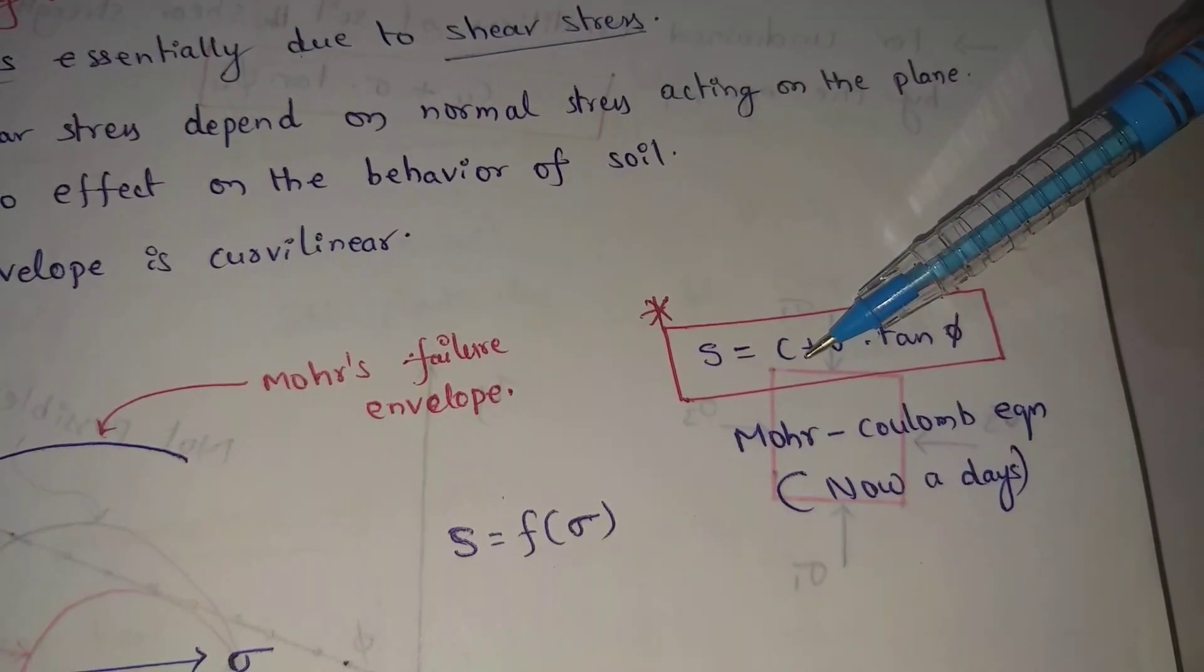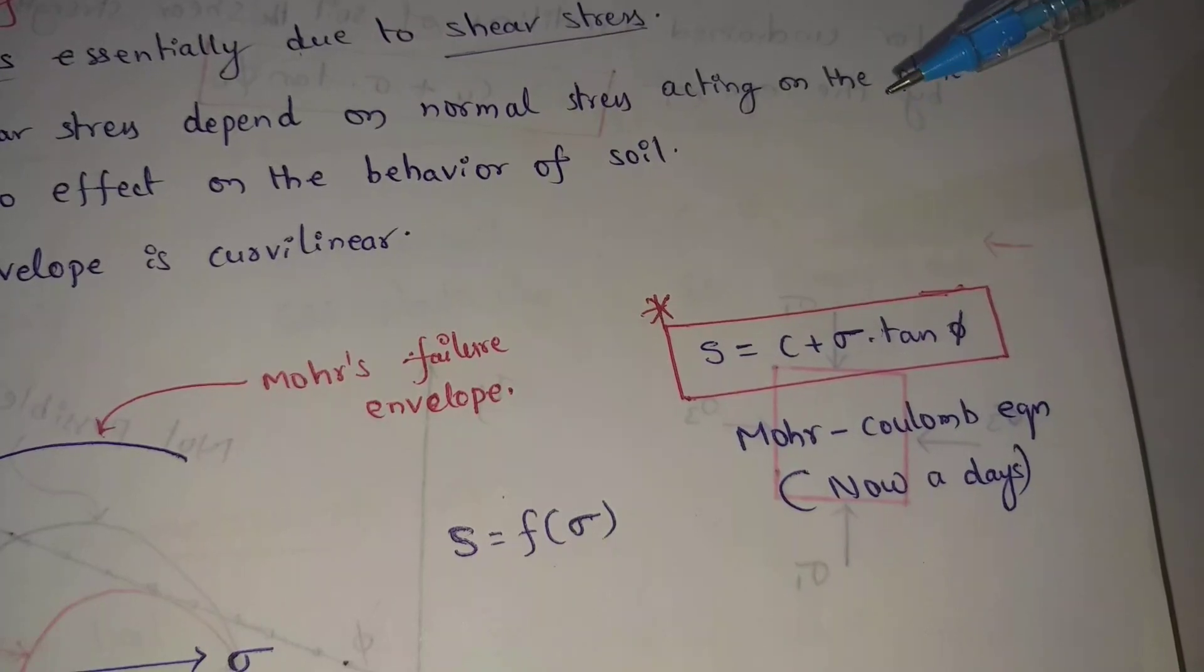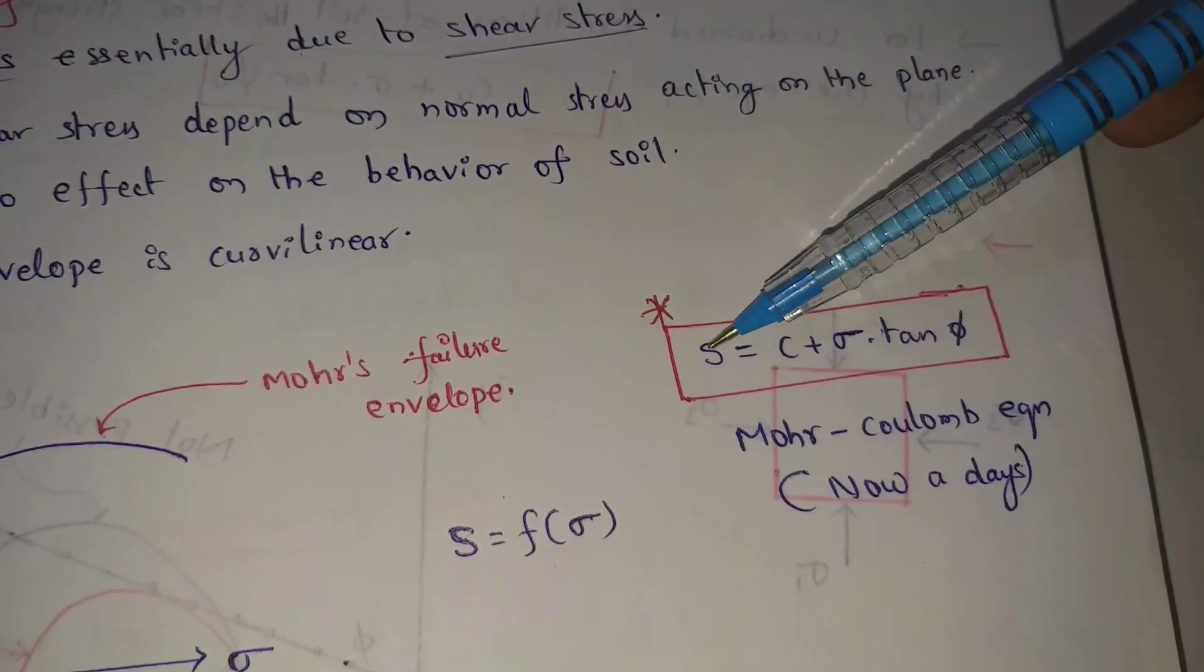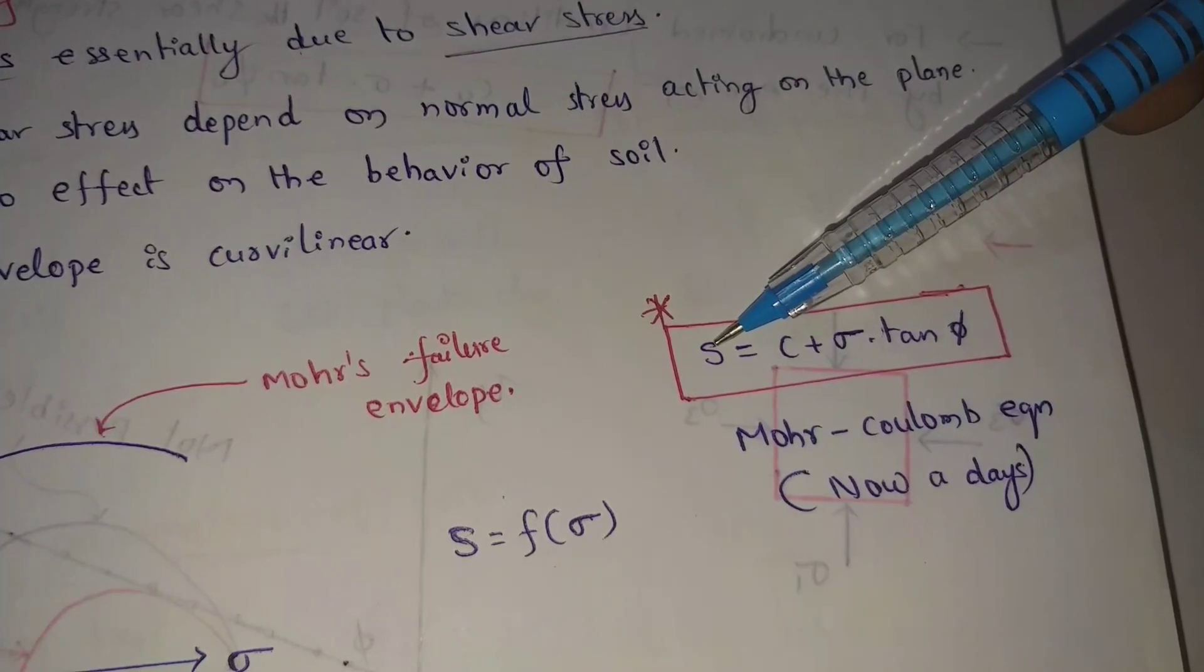C equal to cohesion, in kilonewton per meter square. S, shear strength, also in kilonewton per meter square.